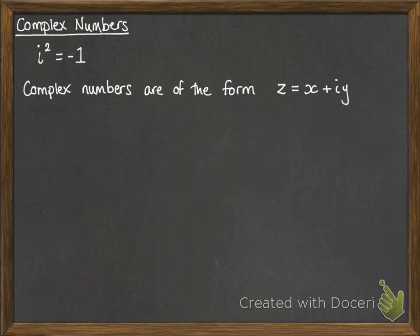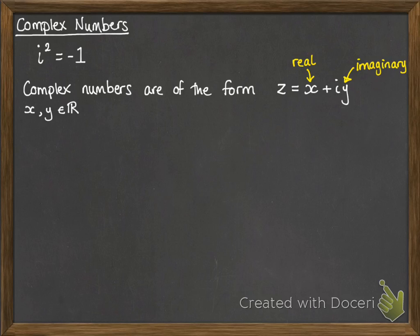Complex numbers are of this form — they're always denoted with a z. You have two parts: x plus iy, where x and y are real numbers. The x part is referred to as the real part of z, and the iy part is the imaginary part of z, because it's the bit with the i. We can also use notation where the real part of z is x and the imaginary part of z is y — note that we just write the coefficient of i, so just the y part.